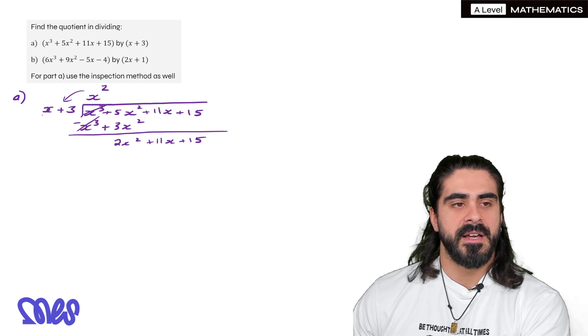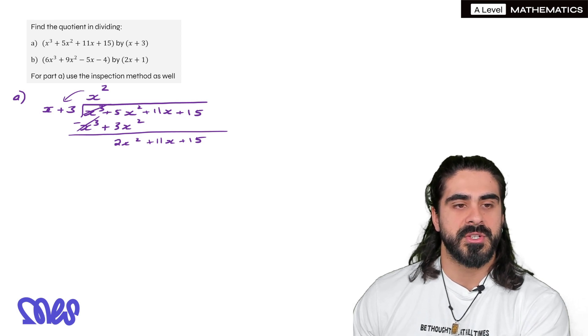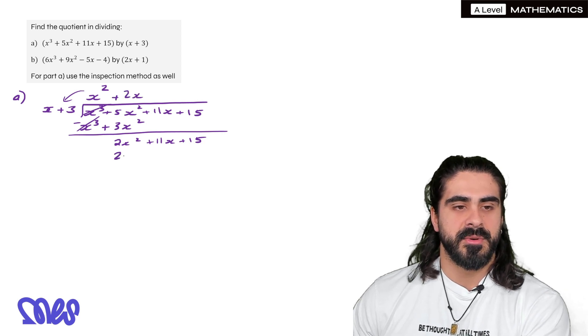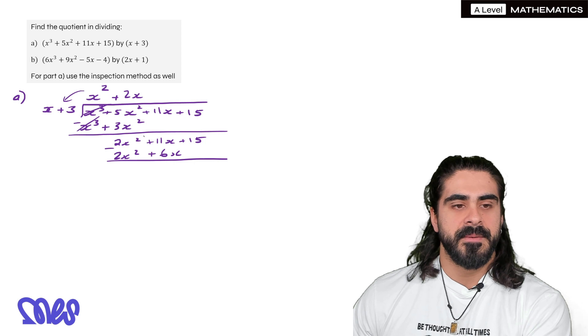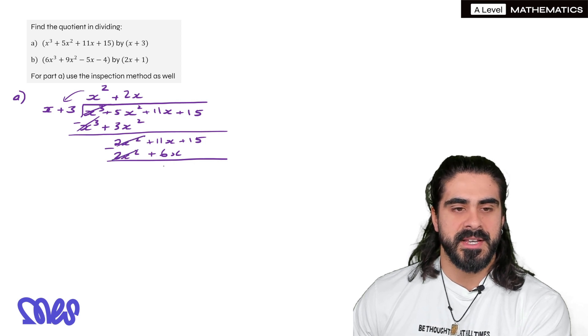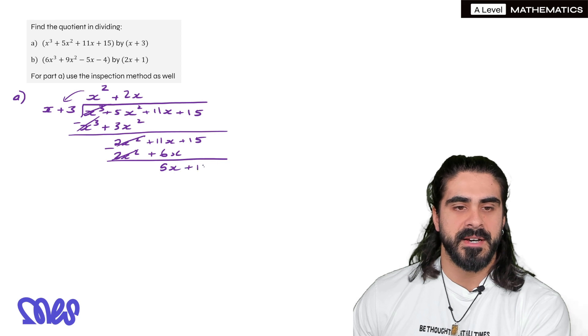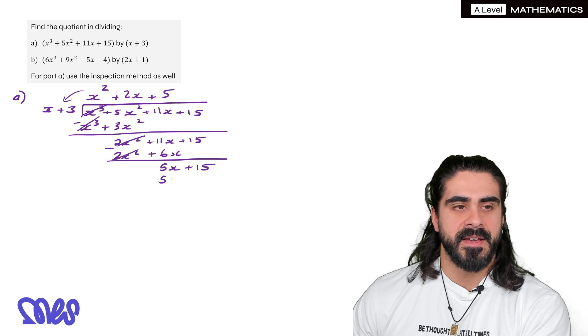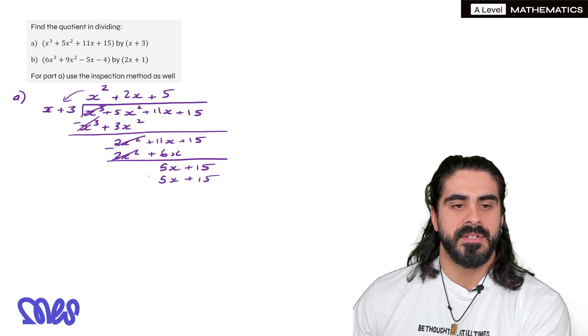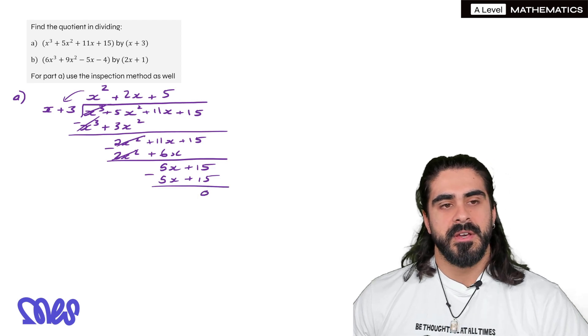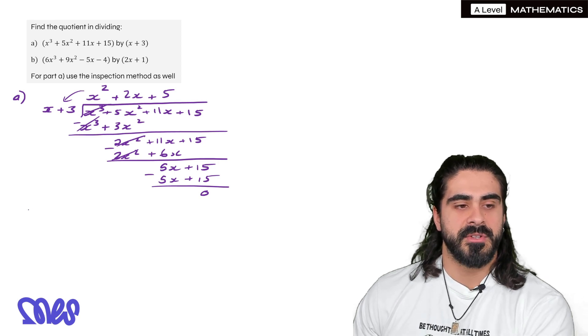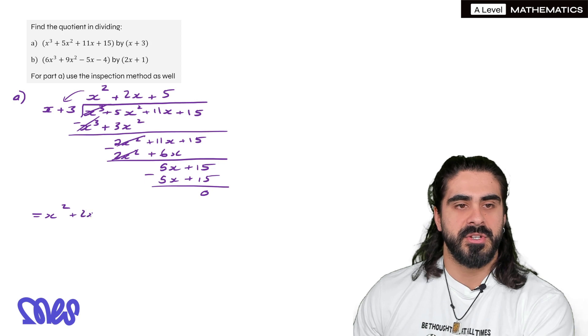Then we look at the leading x again. x times what gives you 2x²? Well the answer is 2x. Then we do the multiplication again. 2x times x is 2x². 2x times 3 is 6x. Subtract. These cancel. 11x minus 6x is 5x. And then the 15 comes down. x times 5 gives you 5x. Then we multiply. 5x plus 15. Subtract. And we get nothing. So there's no remainder here meaning x + 3 goes exactly into the x³ term. So the quotient here is x² + 2x + 5.